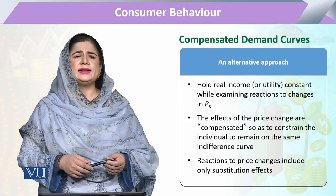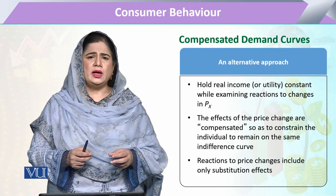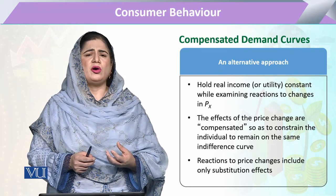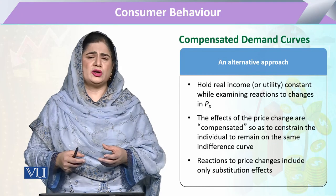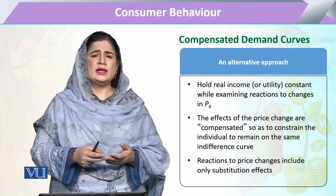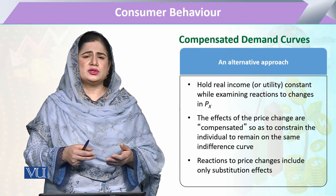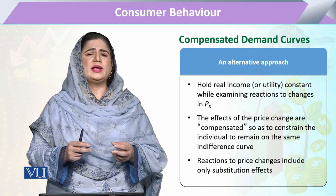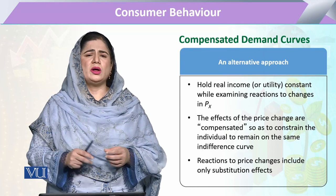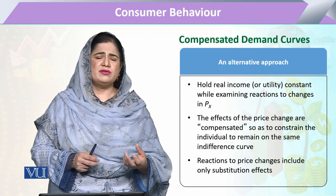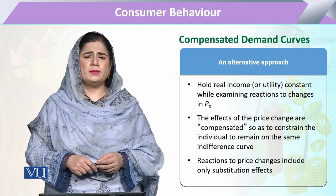There is an alternative approach: if the price of a commodity decreases and the consumer gains increased real income, we can take that extra amount away from the consumer as compensation. Conversely, if the price increases and the consumer must spend more to maintain their utility level, we compensate them accordingly. This way — whether positive or negative compensation — the consumer's existing utility level is maintained.